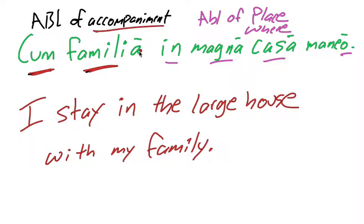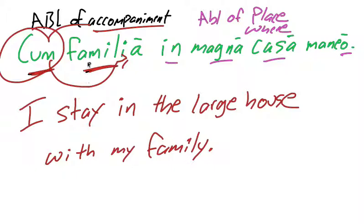And so basically, an ablative of accompaniment is whenever you use the preposition cum with the ablative to mean that you're staying with someone or going with someone, or you're basically accompanying them to do something with you. So you can go to the movies with your friends or the mall with your friends, or you can ride bikes with your brother or with your sister. So if you're doing something with someone, then that is an ablative of accompaniment.